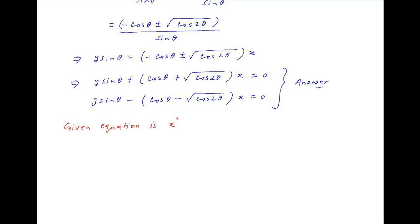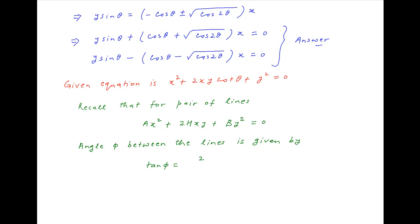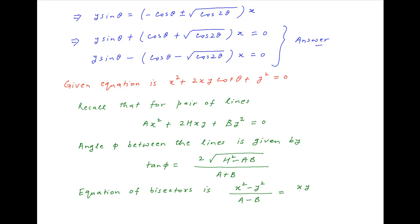The given equation of the pair of straight lines is x² + 2xy cot θ + y² = 0. Recall that the general equation of a pair of straight lines through the origin is ax² + 2hxy + by² = 0. The angle φ between the two lines is given by tan φ = 2√(h² − ab) / (a + b), and the equation of the bisectors is (x² − y²)/(a − b) = xy/h.